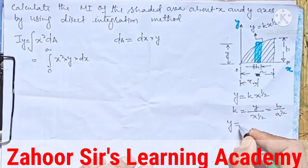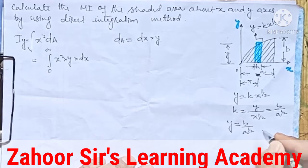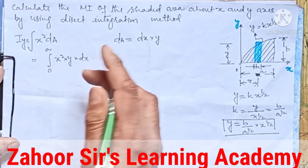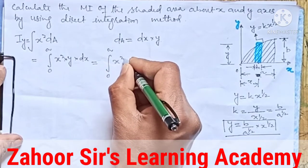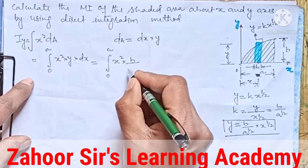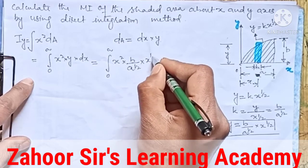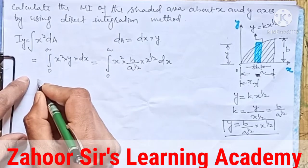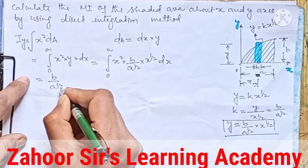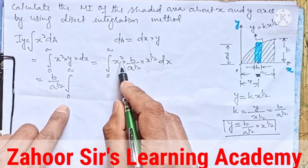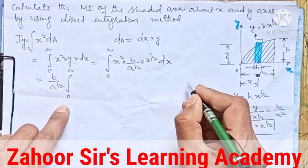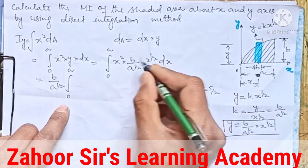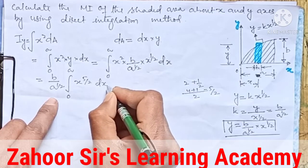Substituting k back, y = (b / a^(1/2)) · x^(1/2). Now substituting this value of y into the integral: it is the integral from 0 to a of x² times (b / a^(1/2)) · x^(1/2) dx. This constant term b / a^(1/2) is taken out. Inside we have x² · x^(1/2) = x^(2 + 1/2) = x^(5/2). So the integral becomes (b / a^(1/2)) times the integral from 0 to a of x^(5/2) dx.